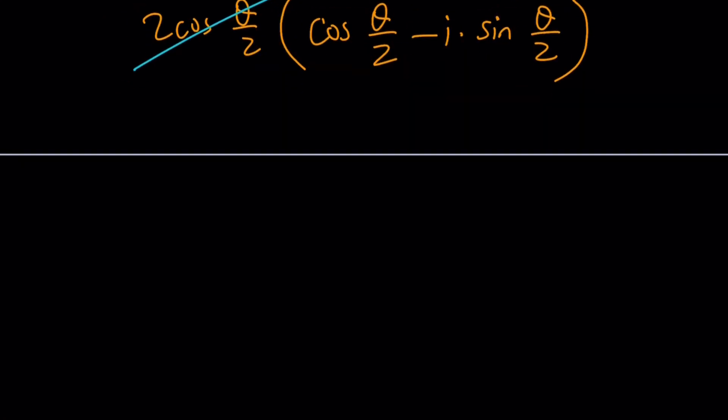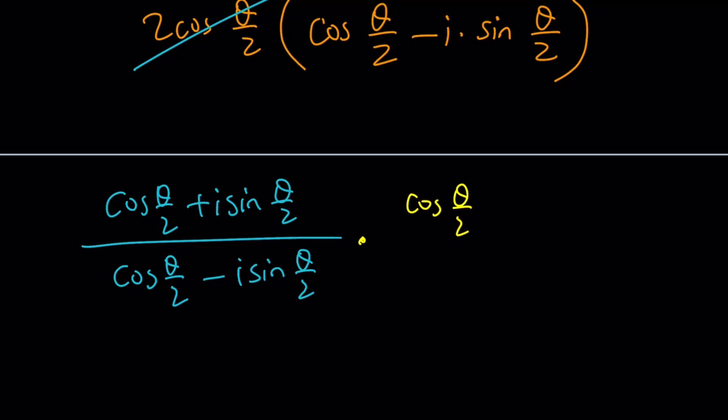Let's go ahead and do it. So we get cosine theta over 2 plus i sine theta over 2 divided by cosine theta over 2 minus i sine theta over 2. And then multiply that by conjugates, cosine theta over 2 plus i sine theta over 2. That comes from the denominator, obviously, right? We have to use the conjugate of the denominator.